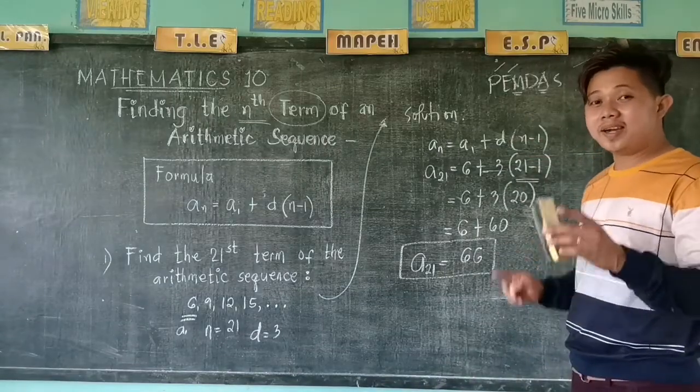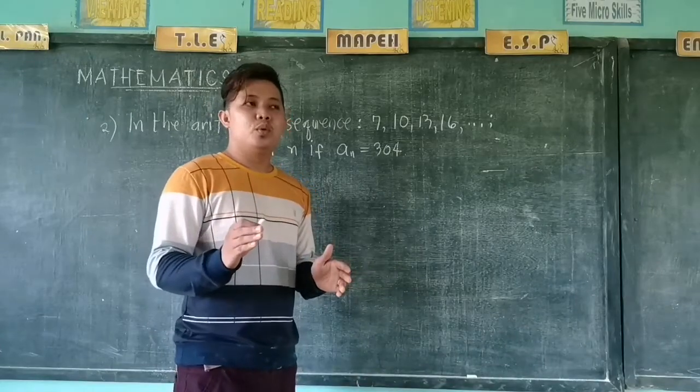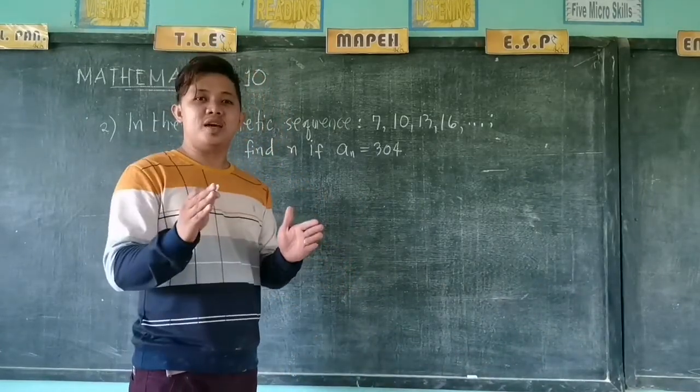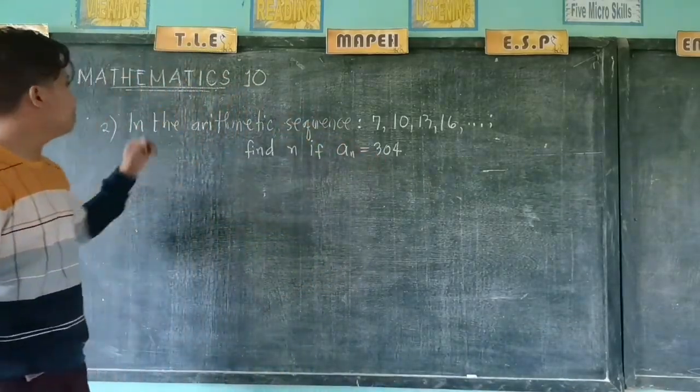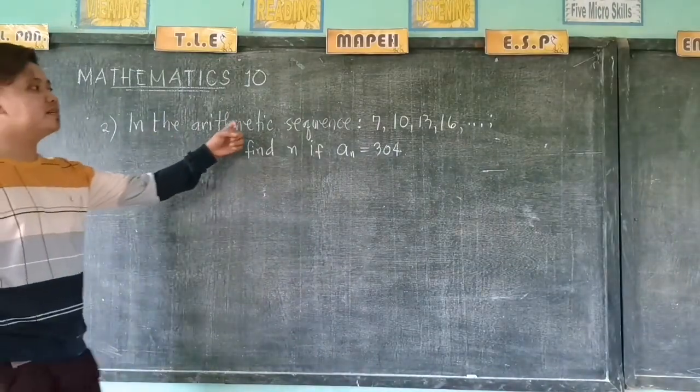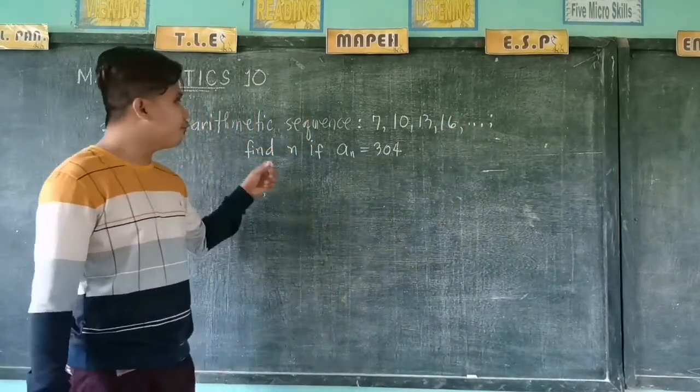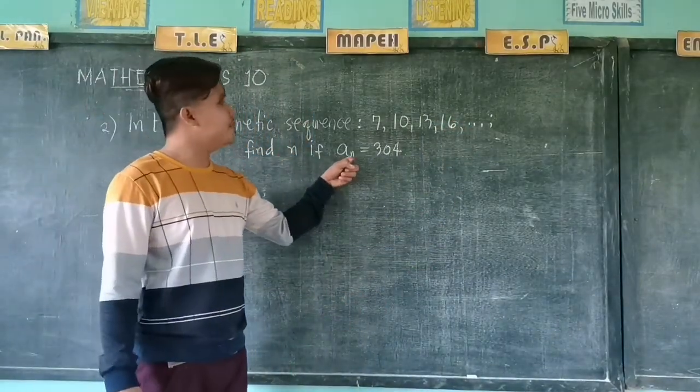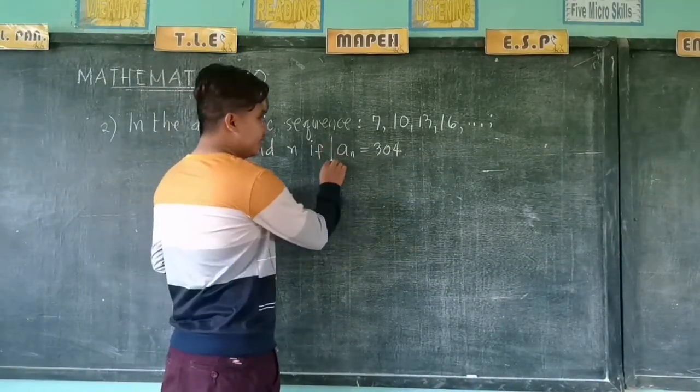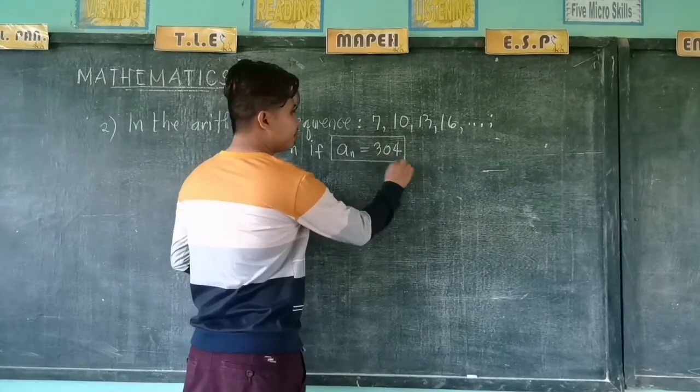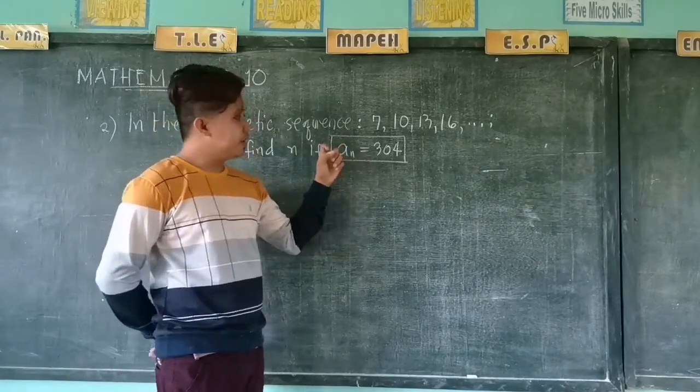Am I clear? In our first example, we did find the nth term. What if you are asked to find n given that nth term? So we have example number 2. In the arithmetic sequence 7, 10, 13, 16..., find n if a_n is equal to 304. Meaning to say, this is your nth term. Let us find n. n is the number of terms.